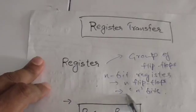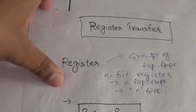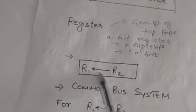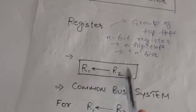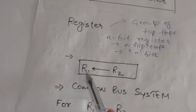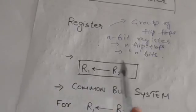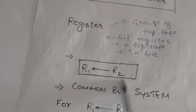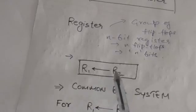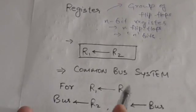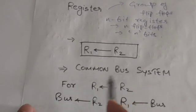An n-bit register is capable of storing any information of n bits. This statement denotes the transfer of content of register R2 into register R1. The content of register R2 will remain unchanged after the transfer — the content of R2 remains unchanged.